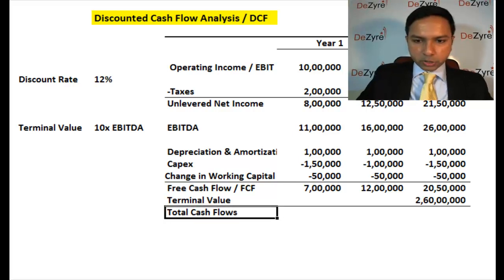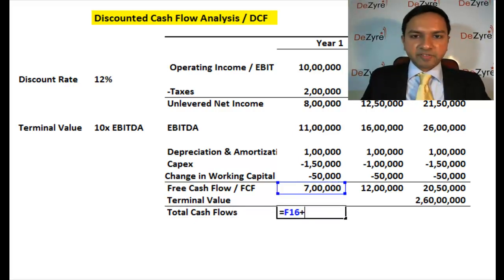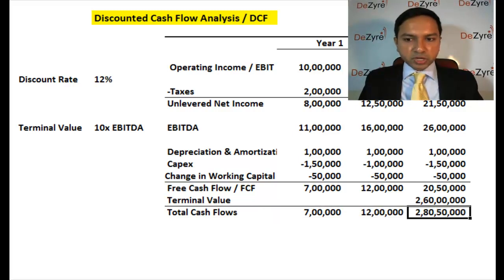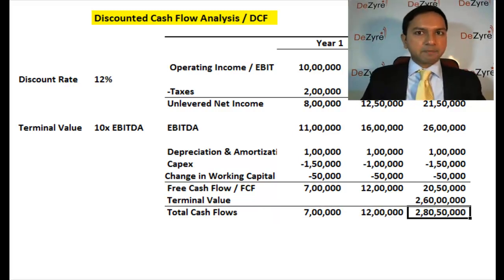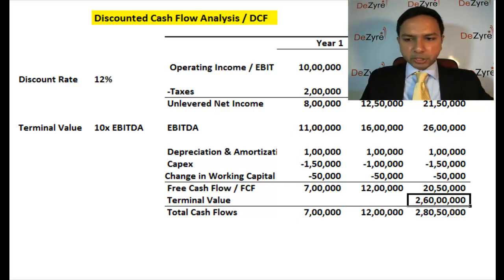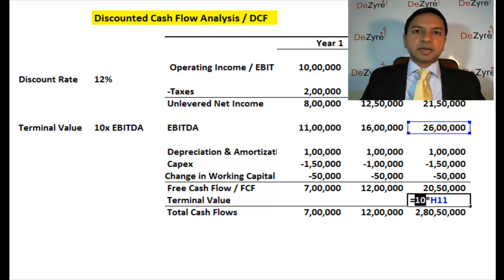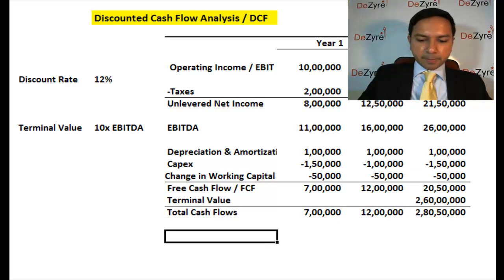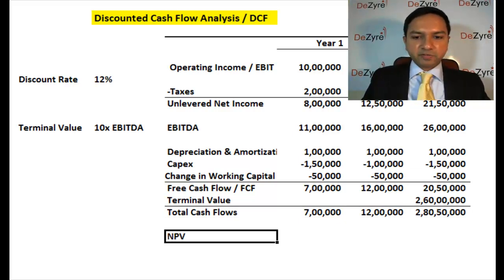The total cash flows combine the free cash flow plus any terminal value. In year one it's 7 lakhs, in year two 12 lakhs, and in year three it's approximately 2.8 crores — because you're adding the 20-lakh free cash flow to the 2.6-crore terminal value from selling the company. Those are your total projected cash flows for the DCF analysis.